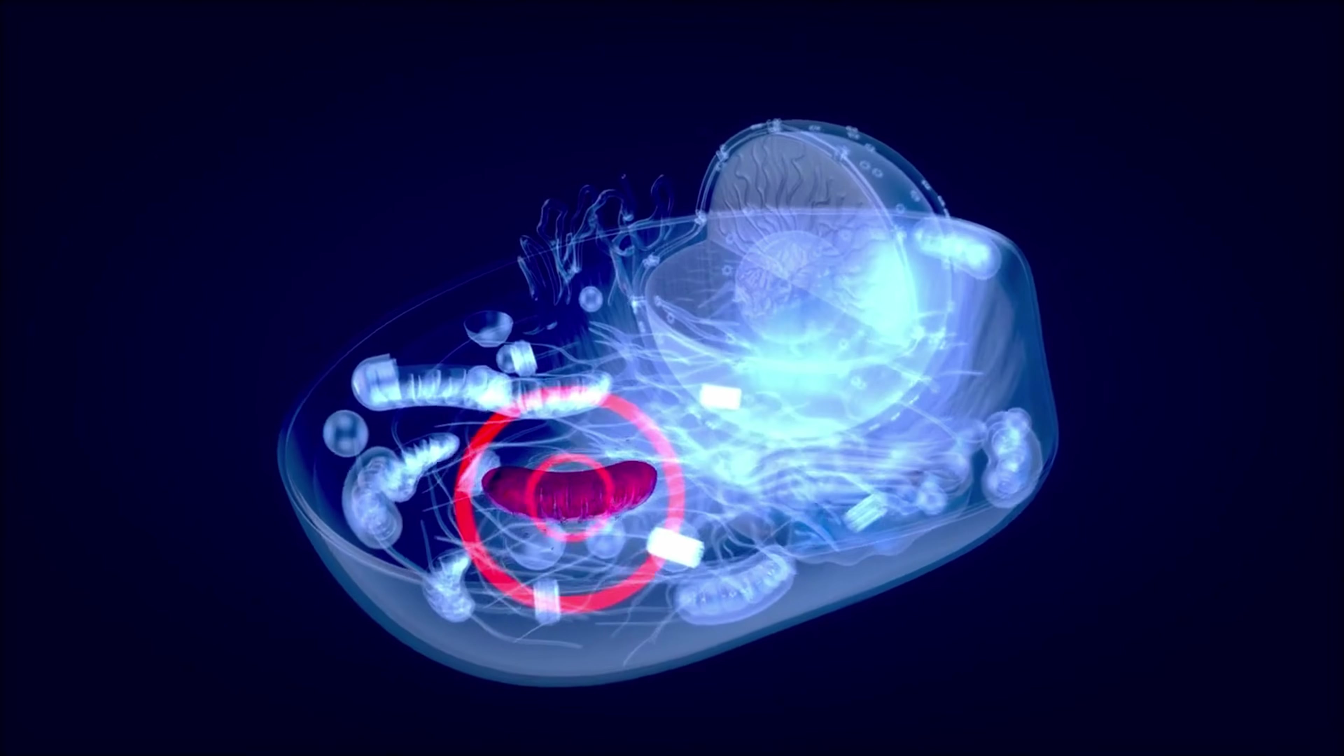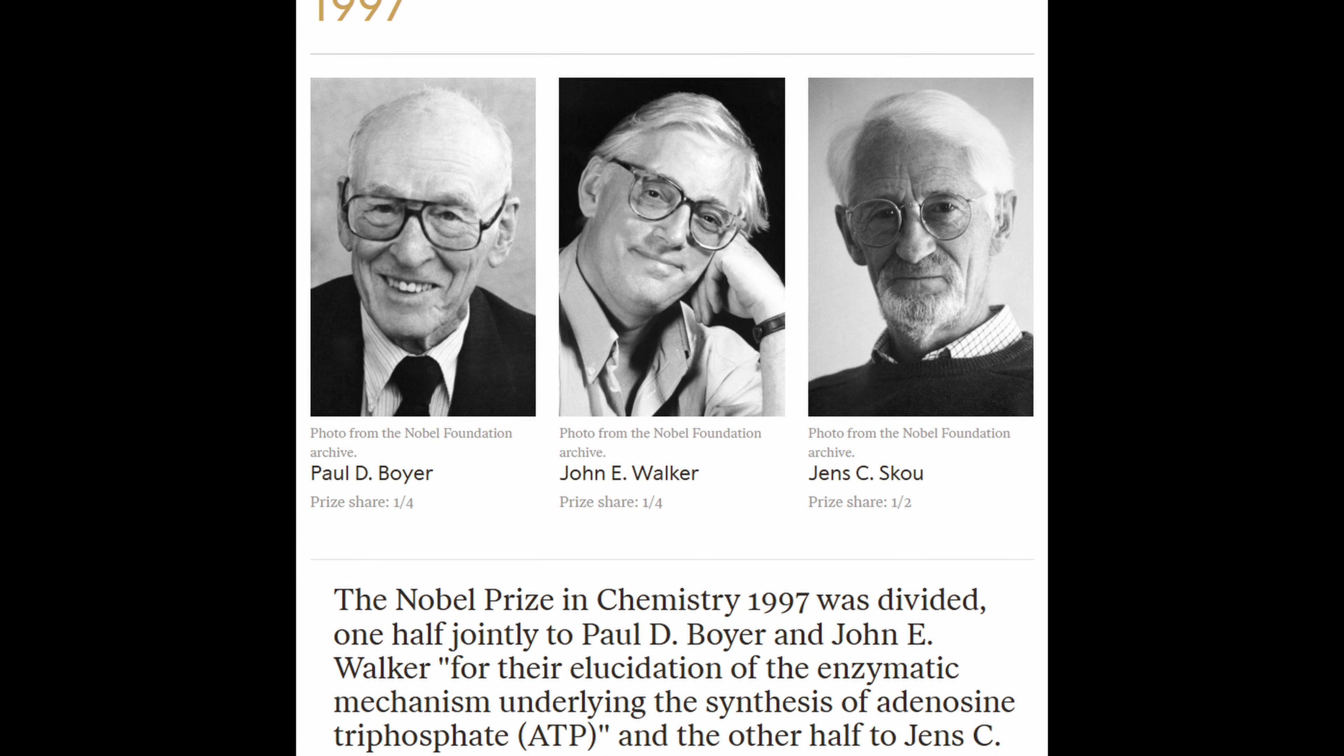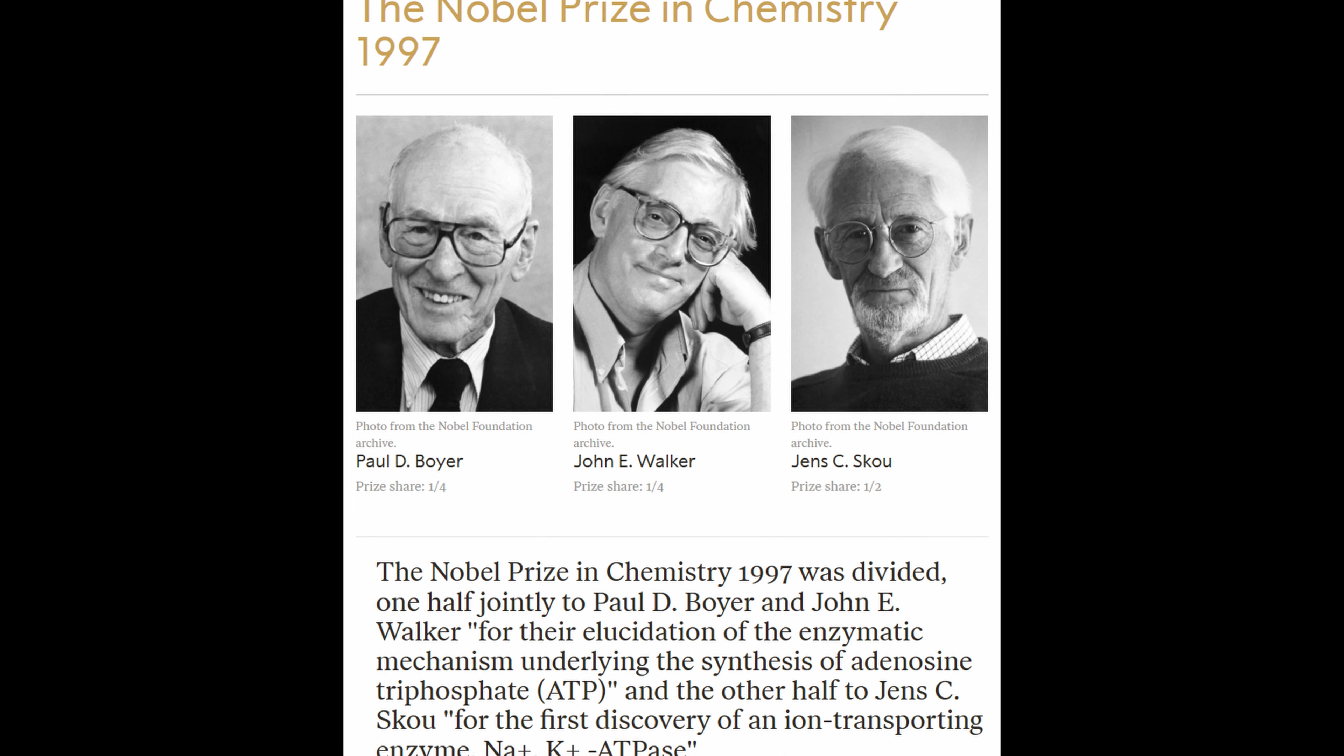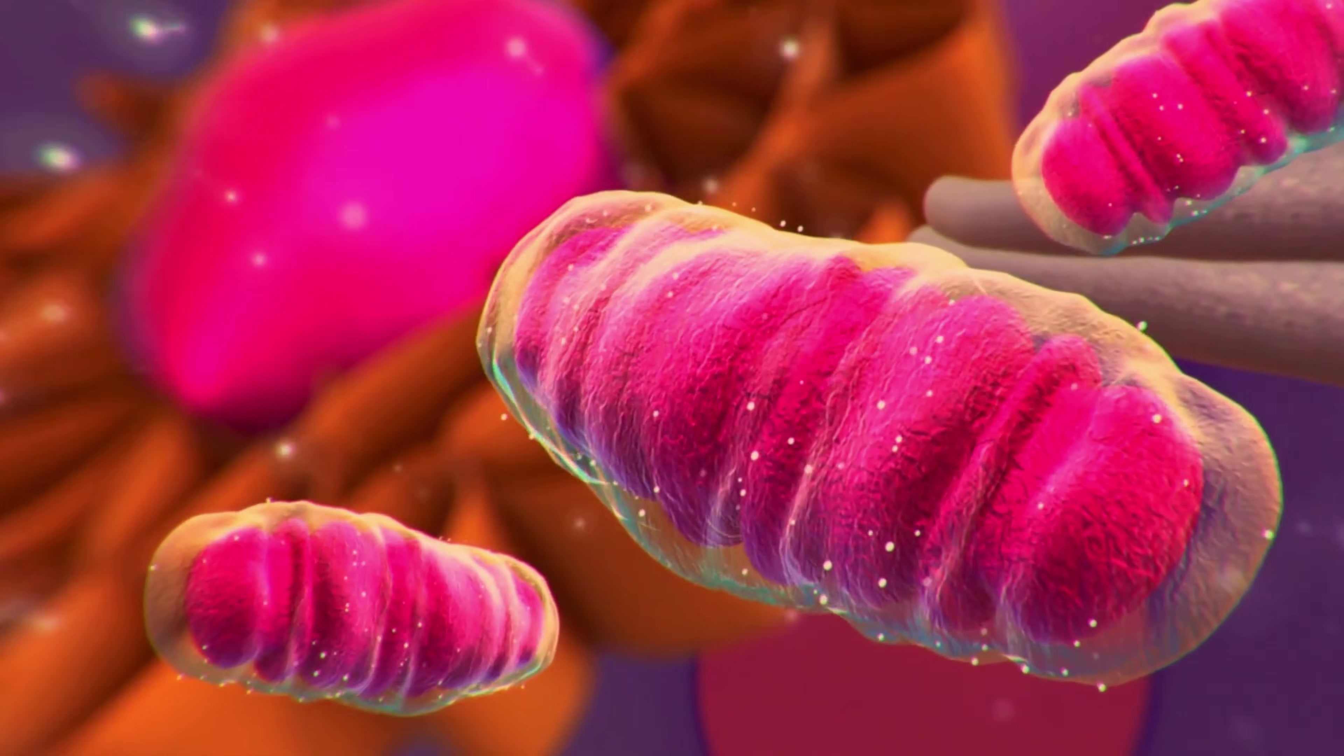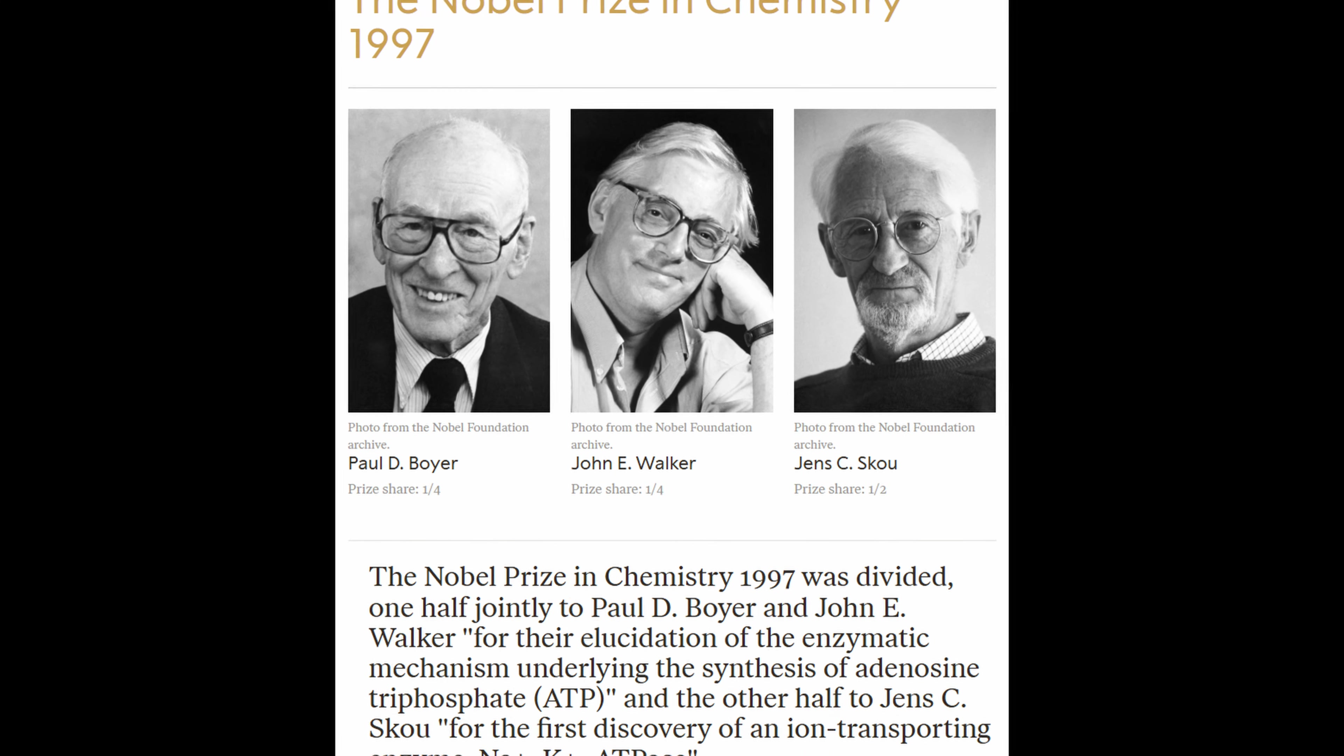ATPs are created in cells, in the mitochondria. It is used. It is recreated. These three scientists are discovering exactly how these organic batteries or energy are produced in our bodies. Paul Boyer, John Walker, and Jen Skoog worked in the laboratory for decades. They found out how energy is produced in the body and received the Nobel Prize in 1997.